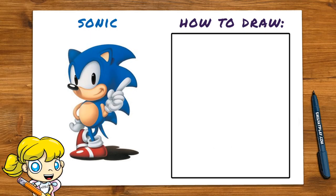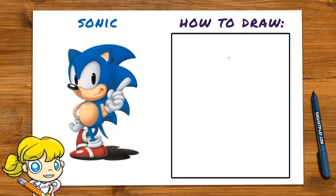Are you ready, kids? Today's first character is Sonic the Hedgehog! We're going to learn to draw these characters using basic shapes. If you can draw a circle, triangles, and ovals, you can draw these characters. Feel free to leave a comment in the chat and let me know what characters you'd like to draw next Cartooning Tuesday.